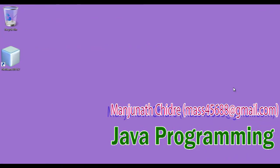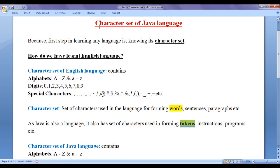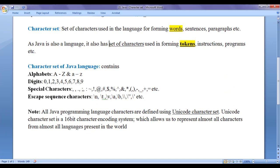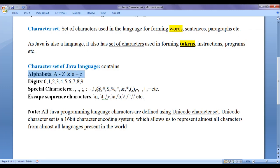Hello friends, welcome to Java programming video tutorials series. In the previous video tutorial we understood the character set of Java language. We understood that the character set of Java language contains a set of characters used in forming tokens, instructions, and programs. The character set contains alphabets, digits, special characters, and escape sequence characters.